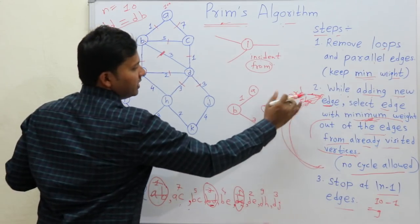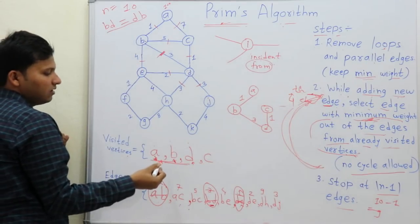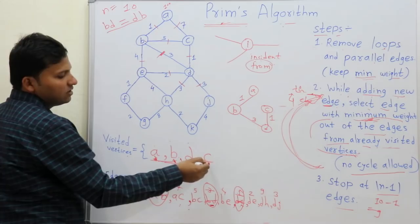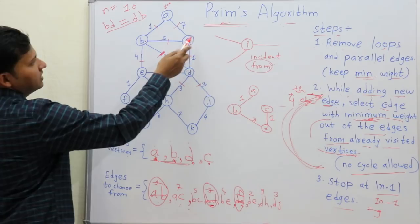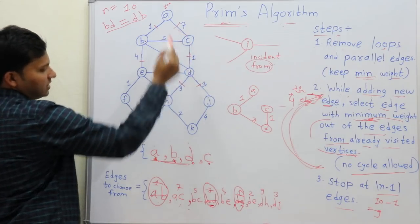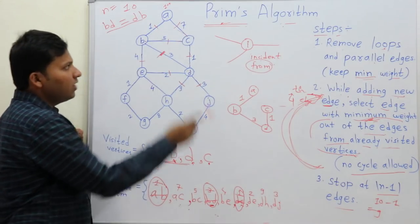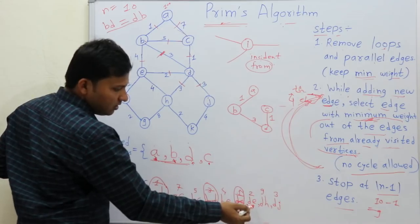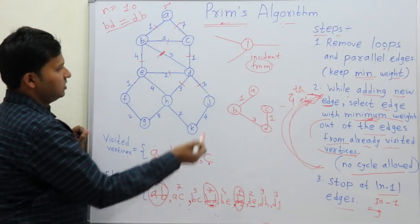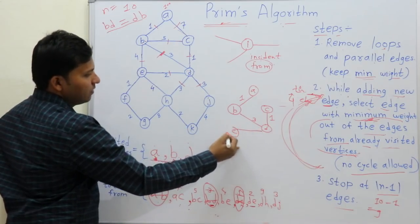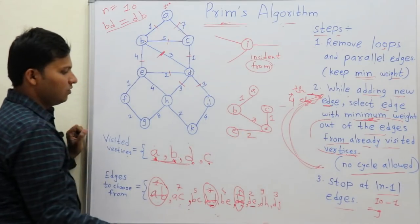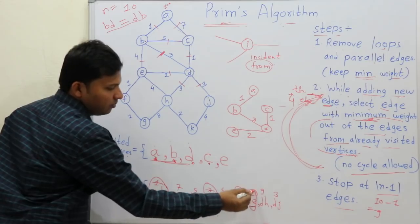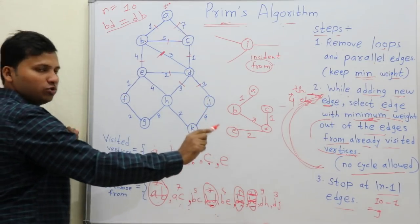Now for the 4th edge, visited vertices are A, B, D, and C. All edges from C are already in the set, so no new edges need to be added. Choosing the minimum from the current set, DE is the minimum with weight 2. We add DE to the spanning tree, E is added to the visited vertices set, and DE is deleted from the candidate set.